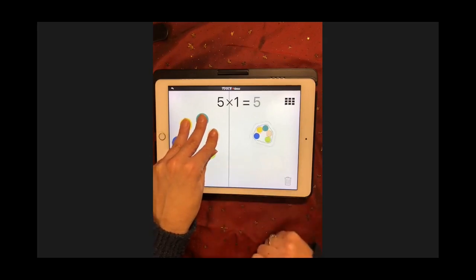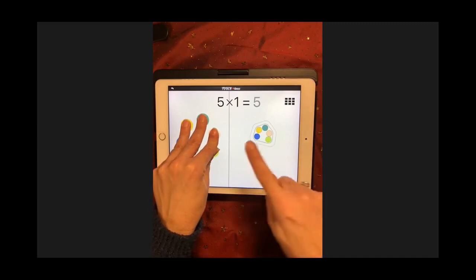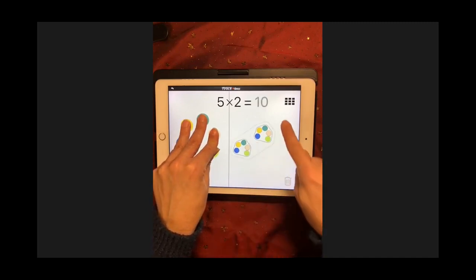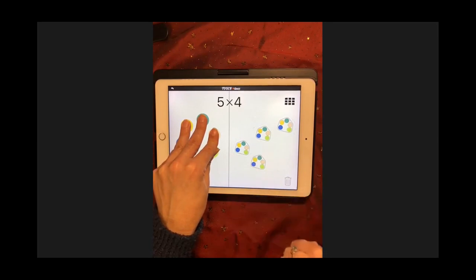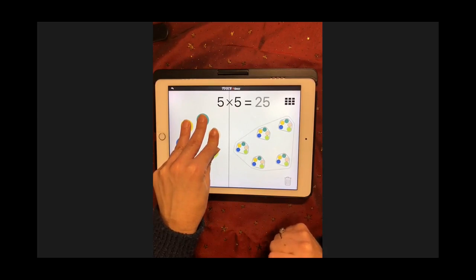So right now I have 5 times 1 equals 5. If I make another pod, I have 10, 15, 20, 25. I'm showing you how to skip count by 5 by changing the number of pods.